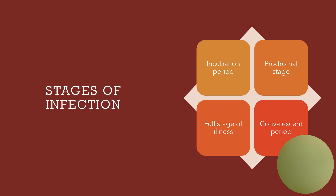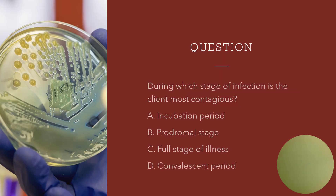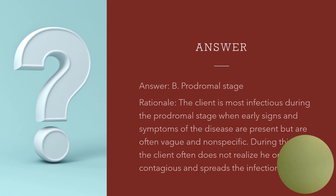The full stage of illness is where the presence of specific signs and symptoms of the disease are very apparent. And the convalescent period is when the client recovers from the infection. The correct answer to during which stage of infection is the client most contagious is the prodromal stage.